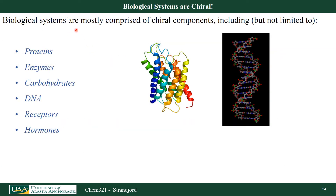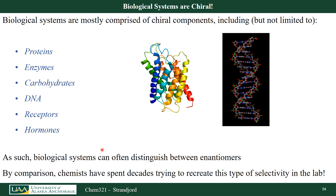Most biological systems are comprised of chiral compounds, including proteins, enzymes, carbohydrates, DNA, receptors, and hormones. If you were to ingest a chiral compound, it would be acted on differently depending on which enantiomer you have. Biological systems can distinguish between enantiomers. Chemists have spent decades trying to recreate this selectivity in the lab with only marginal luck. Biology can differentiate very easily between an R and an S enantiomer, whereas some lab practices cannot distinguish between the two.